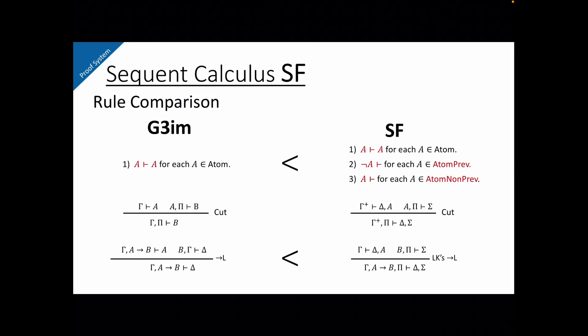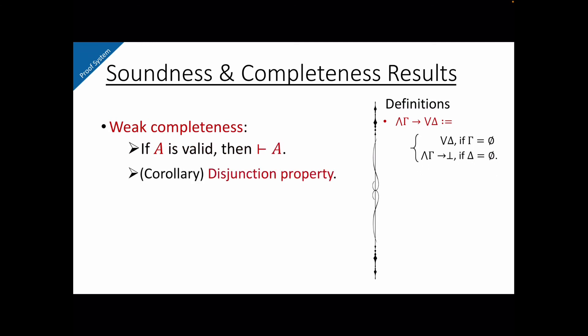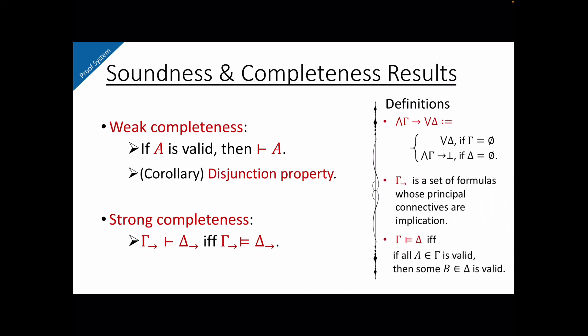And as the final topic of this presentation, let me briefly state soundness and completeness results of strict finitistic logic. One can prove soundness in this form, and for this notation of implication, please refer to this definition. Also, one can prove weak completeness in this form, and also, as a corollary to this, one can prove disjunction property. As of strong completeness about logical consequences, this holds if the logical consequences are those between implicational formulas.